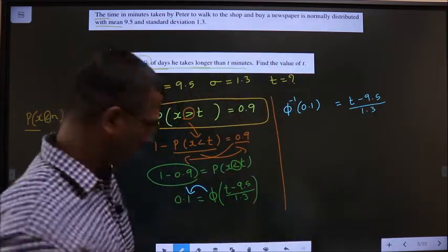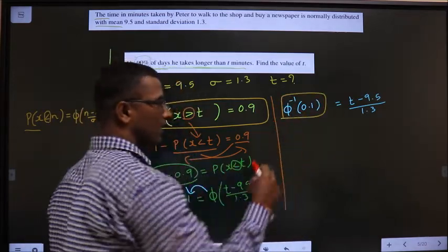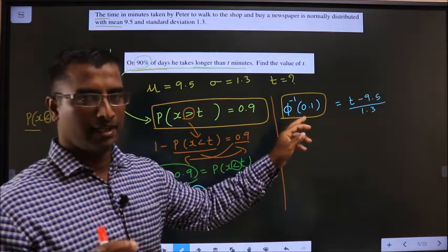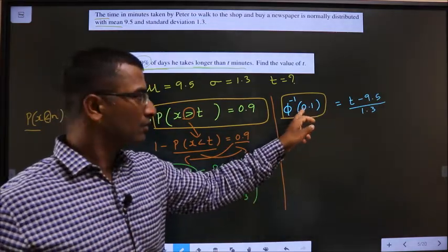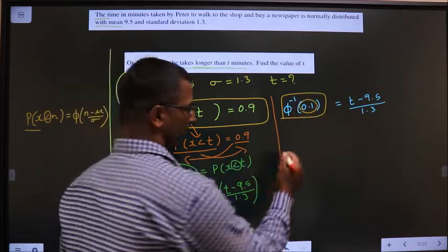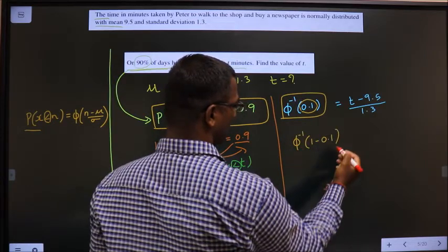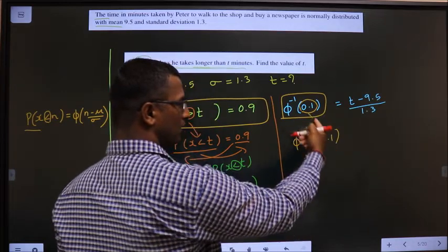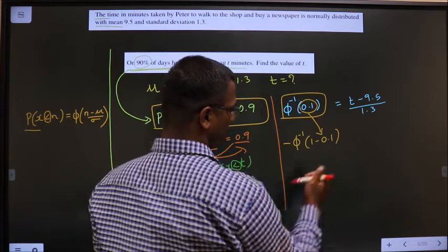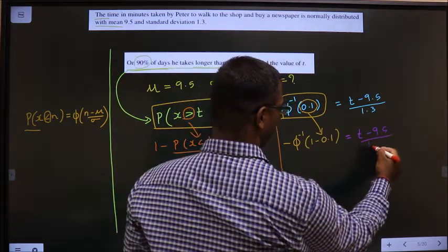Okay. Now, our normal distribution table starts from 0.5. We don't have 0.1 in that. To make this value more than 0.5, what we should do is, do 1 minus phi inverse of 1 minus 0.1. Whenever inside you are doing 1 minus, outside you should put a negative sign. It's a rule. Equal to T minus 9.5 by 1.3.